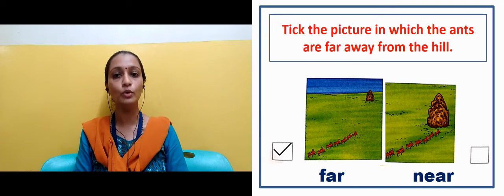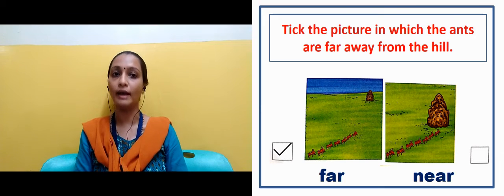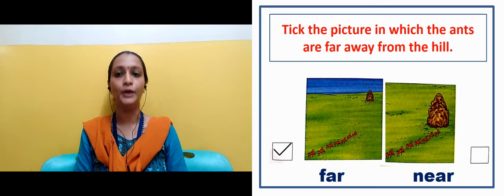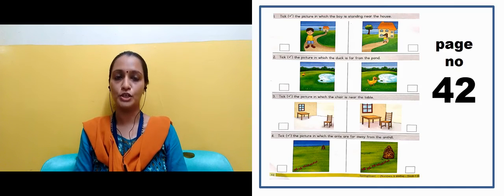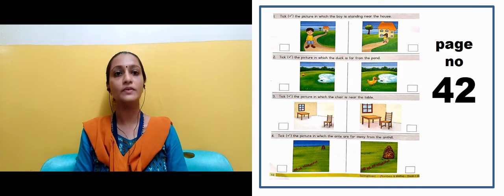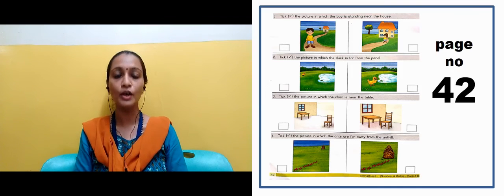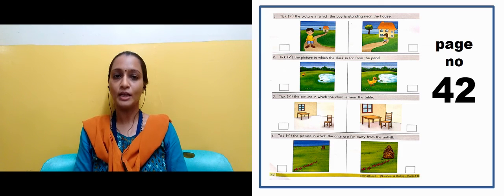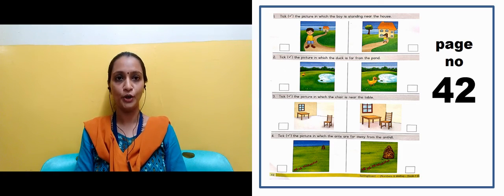So you have to tick the farm image. Jho farm hai, woh wali image ko aapko tick karna hai. Now there is page number 42 in your book. If this activity is given, you can do this activity in your book. Thank you students and parents, stay safe at home.